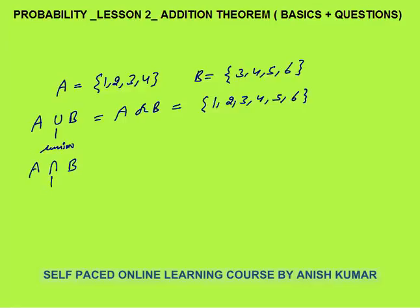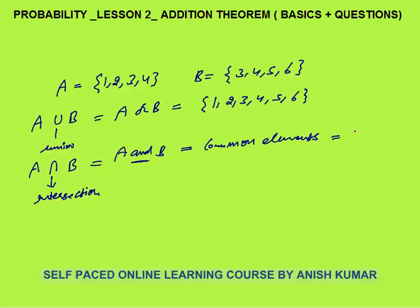When I say A intersection B — this is the intersection sign — A intersection B or you can say A and B. That means the elements which are there in both A as well as B. Common elements — the elements common to both A and B — are 3 and 4.